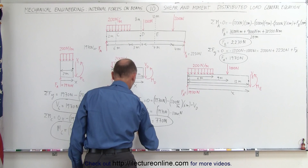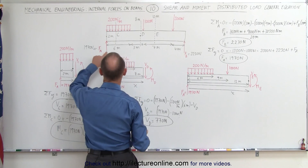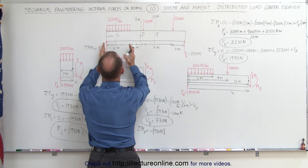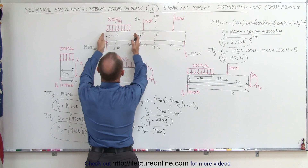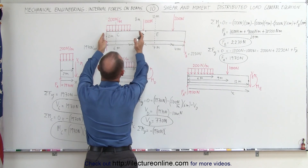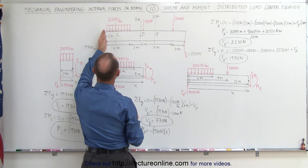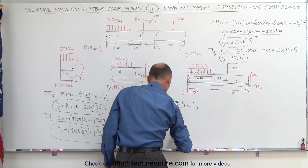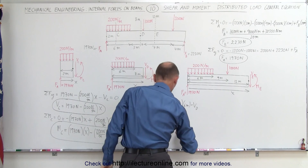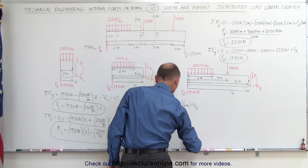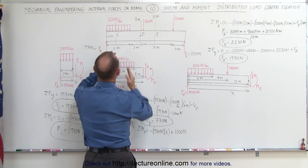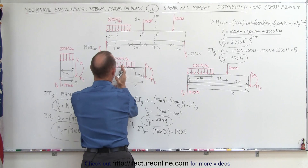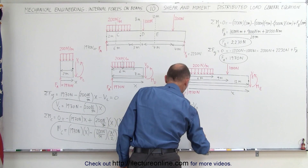Next we find the sum of the moments about D, which equals 0. The moment caused by F sub A is minus 1,970 N times x, where x is the total distance from 0 to the cut point between 6 and 9 meters. The distributed load contributes plus 1,200 N — that's 6 meters times 200 N/m — acting as if at its center point of 3 meters, so the moment arm is x minus 3 meters.